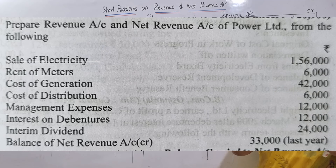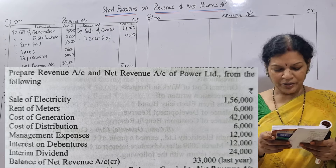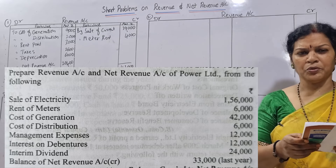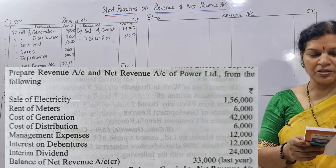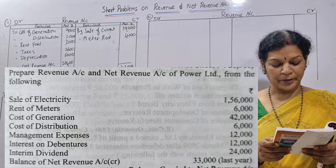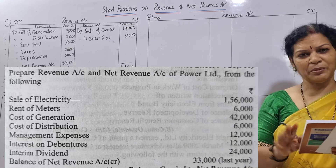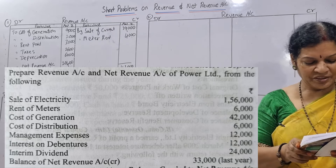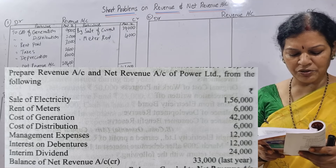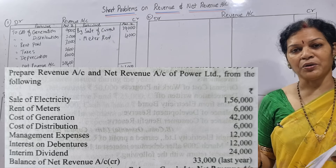Prepare revenue account and net revenue account of Power Limited from the following. Sale of electricity and rent of meters - both are income, so revenue account credit side. Cost of generation, cost of distribution, management expenses - these are all expenses, revenue account debit side. Interest on debentures and interim dividend - same as the last problem - both will come in the net revenue account debit side. Balance of net revenue account is given for last year, so credit side of net revenue account.